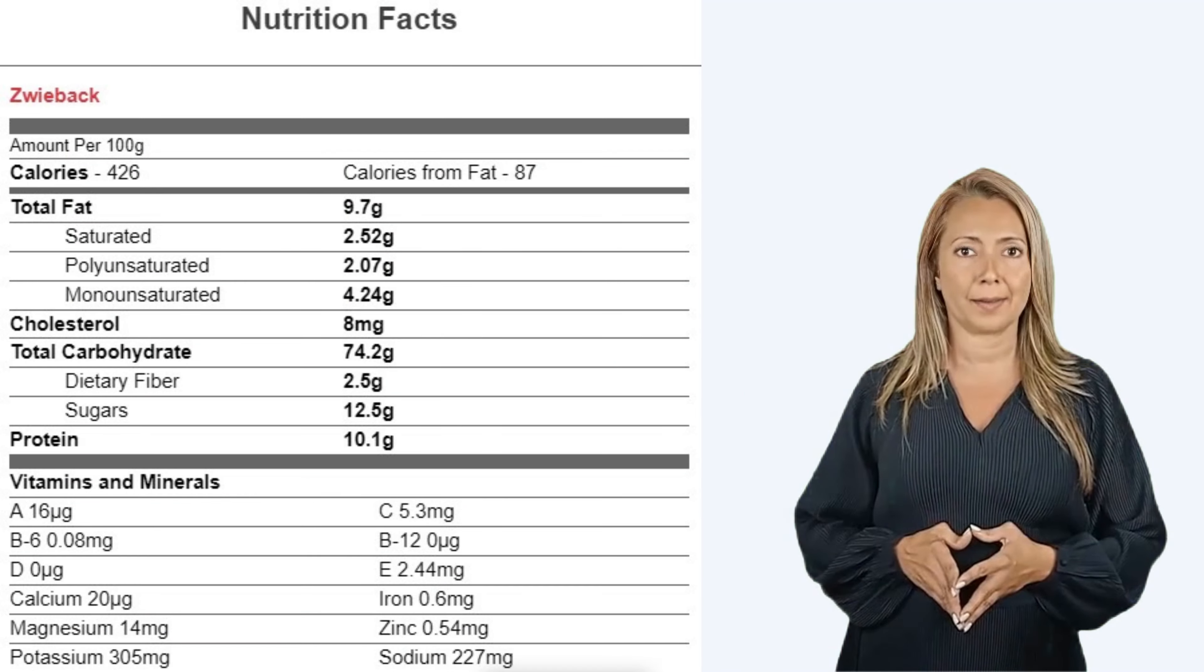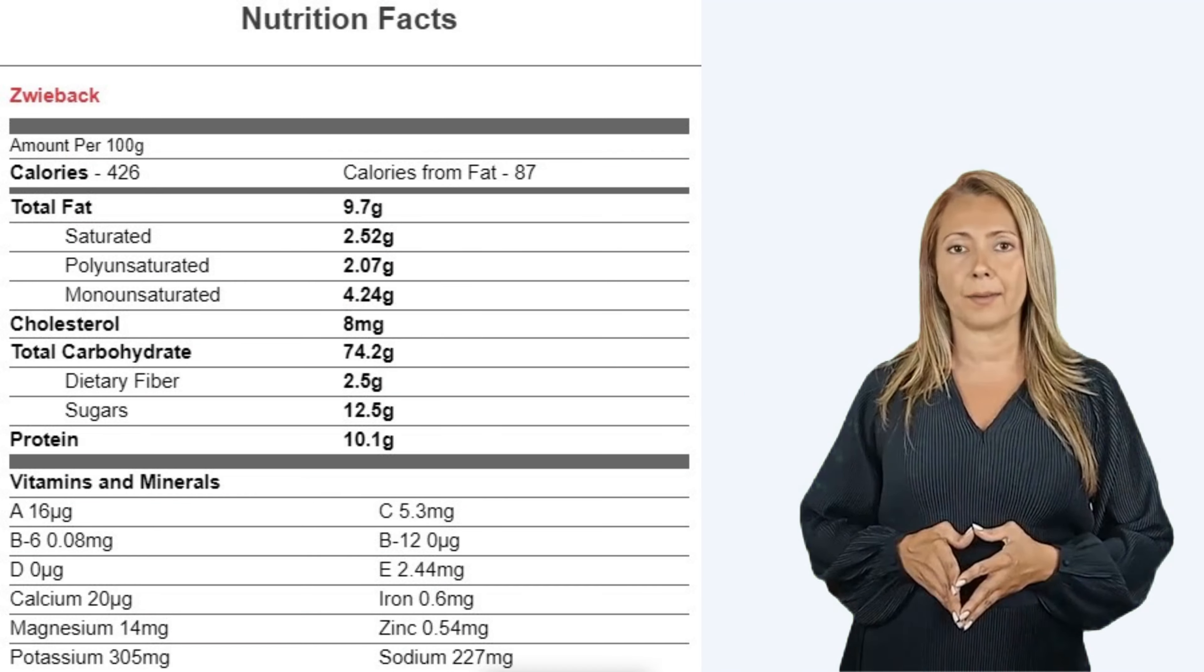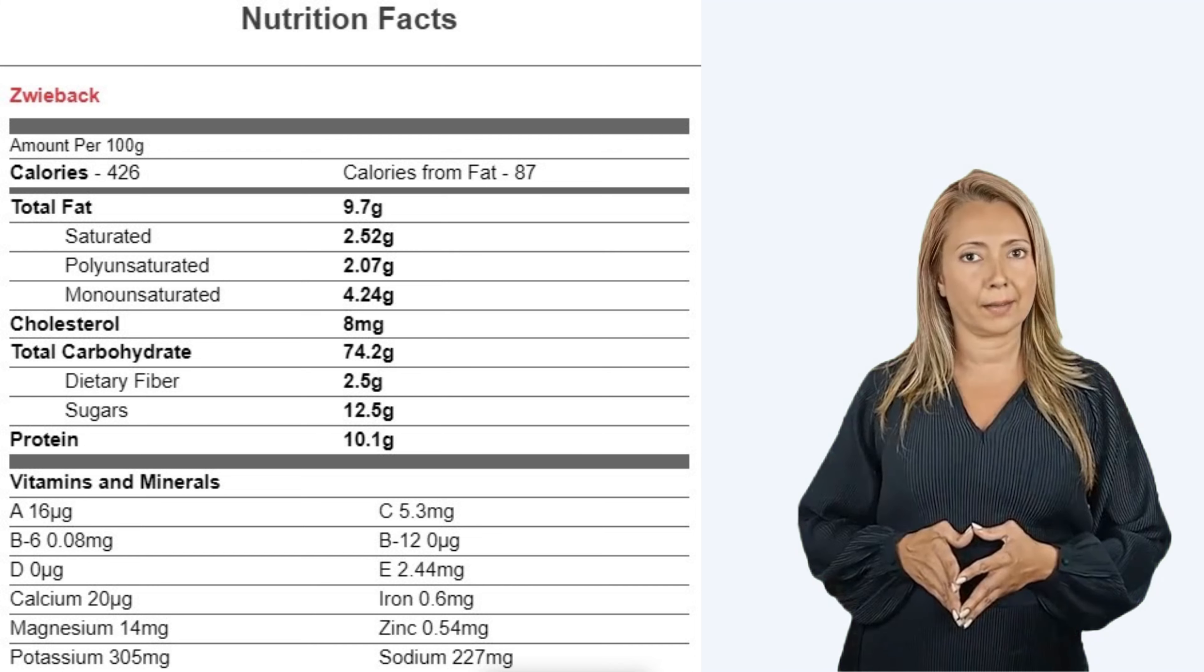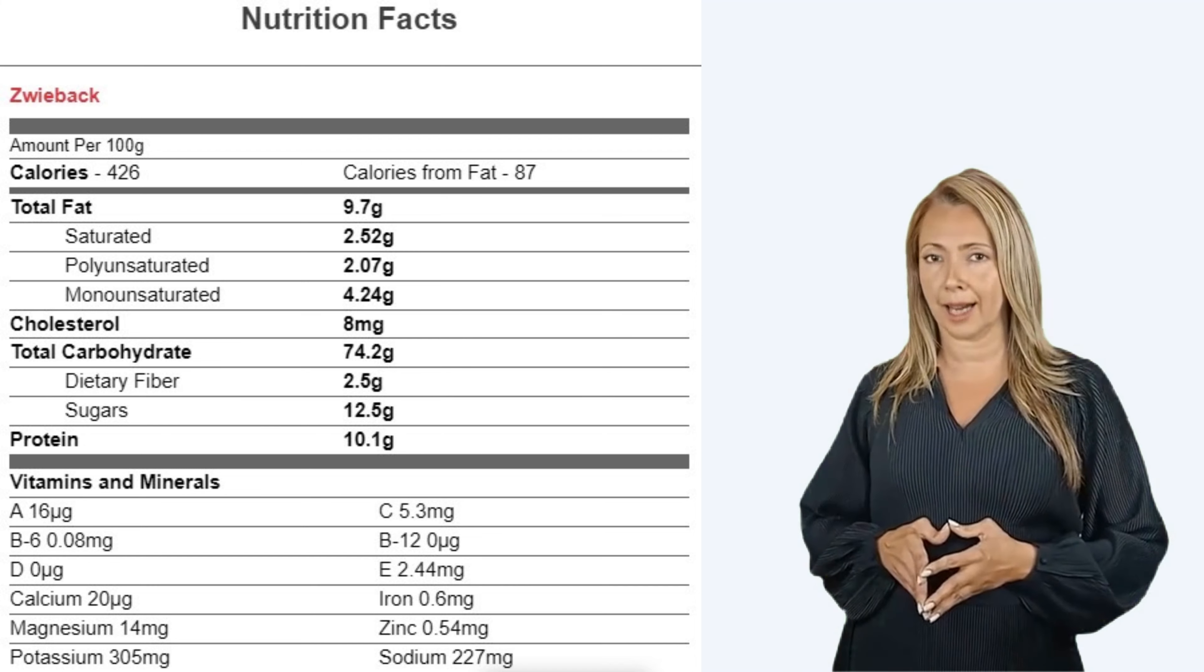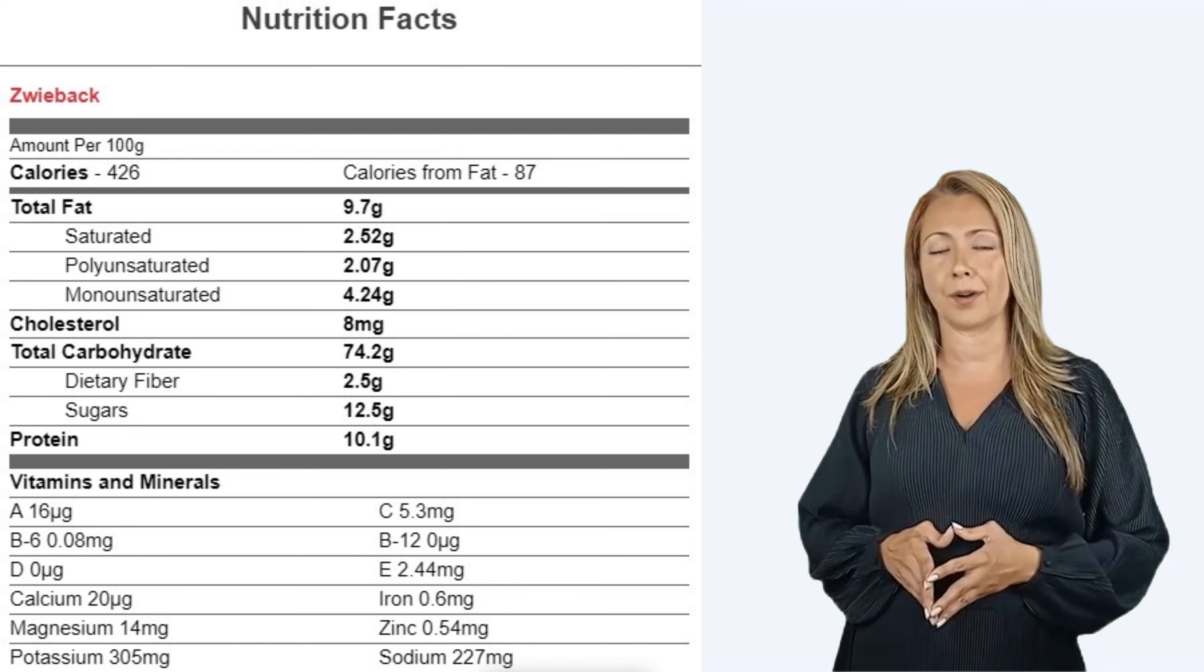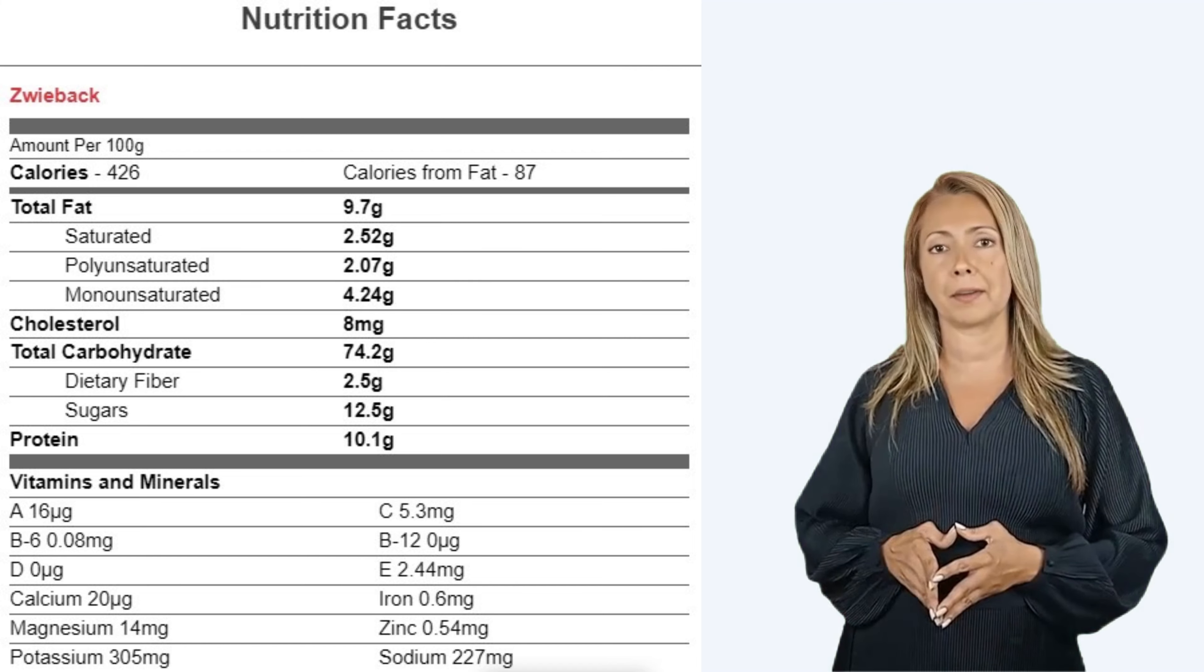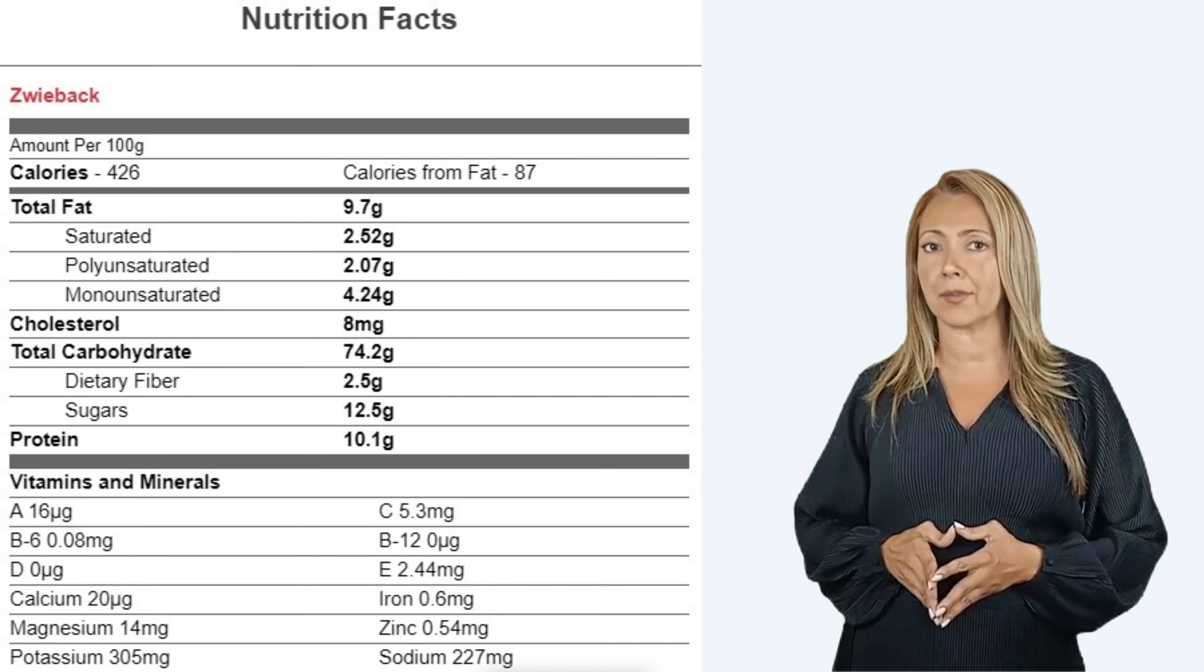Nutrition Facts: Zwieback Amount per 100 grams. Calories 426, calories from fat 87. Total fat 9.7 grams, Saturated 2.52 grams.